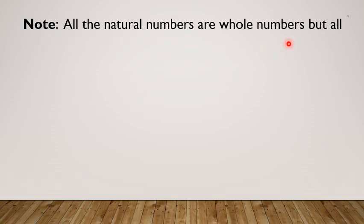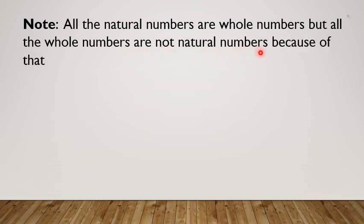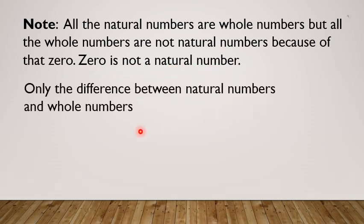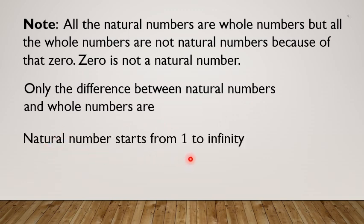Note: all the natural numbers are whole numbers, but all the whole numbers are not natural numbers because of 0. Zero is not a natural number. The only difference between natural numbers and whole numbers is that natural numbers start from 1 to infinity, and whole numbers start from 0 to infinity.